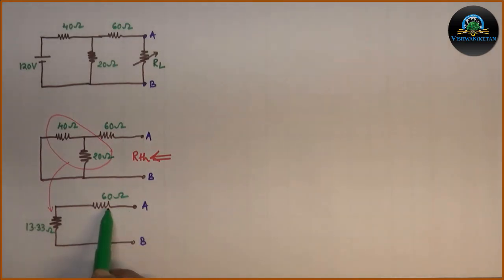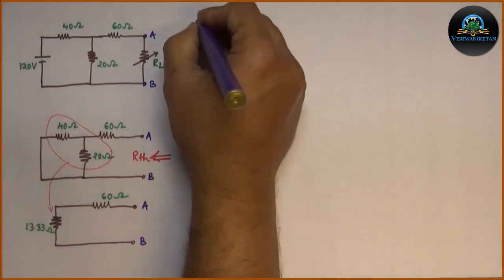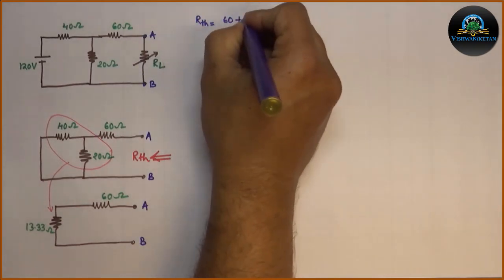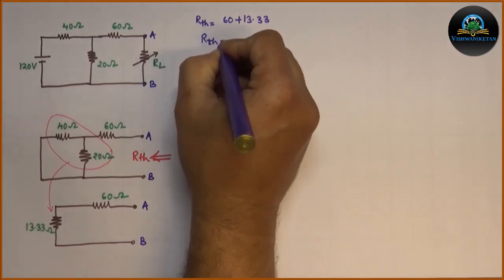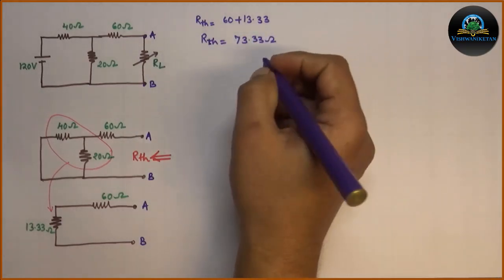Again, in the modified circuit, 60 ohm and 13.33 ohm are connected in series. Hence, resistance across AB, which is RTH, is equal to series combination of 60 and 13.33. Hence, we can write down as RTH is equal to 73.33 ohm.